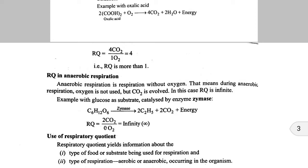Now the uses of RQ: if we know the value of RQ — whether it is 1, 0, or greater than 1 — we can determine which substrate is being oxidized in cellular respiration. The first use is identifying the type of food or substrate being used for respiration. The second use is determining which type of respiration — aerobic or anaerobic — is taking place in the cell.